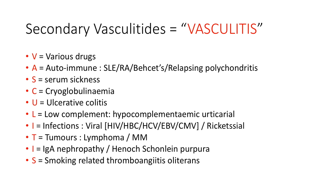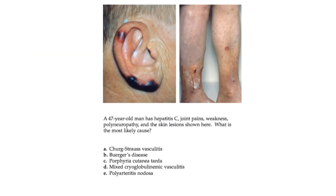Secondary vasculitis can affect any vessel size with considerable overlap. The mnemonic VASCULITIS helps remember the causes: V — various drugs (propylthiouracil, hydralazine, amiodarone, etc.); A — autoimmune (SLE, rheumatoid arthritis, Behçet's, relapsing polychondritis); S — serum sickness (often associated with penicillin); C — cryoglobulinemia; U — ulcerative colitis/low complement; L — low complement in hypocomplementemic urticarial vasculitis; I — infections (HIV, hepatitis B and C, EBV, CMV, rickettsia); T — tumors (lymphoma, multiple myeloma); I — IgA nephropathy; S — smoking-related and secondary to nutrients.